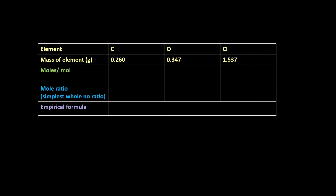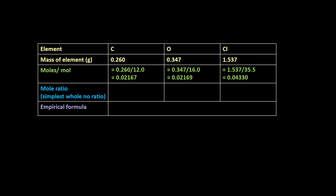For carbon: 0.26 grams divided by the molar mass of carbon, 12 grams per mole, gives 0.02167 moles. For oxygen: 0.347 grams divided by the molar mass of oxygen, 16 grams per mole, gives 0.02169 moles. For chlorine: 1.537 grams divided by the molar mass of chlorine, 35.5 grams per mole, gives 0.04330 moles.